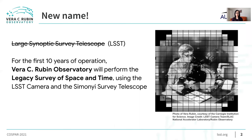You might ask, why is Ruben Observatory? You might have heard of our old name, which was Large Synoptic Survey Telescope or LSST. Around a year ago, we changed our name to be Vera C. Ruben Observatory to honor Vera Ruben. We still keep the acronym LSST, but now it means Legacy Survey of Space and Time, which is the science survey we'll do in the first 10 years of operation.